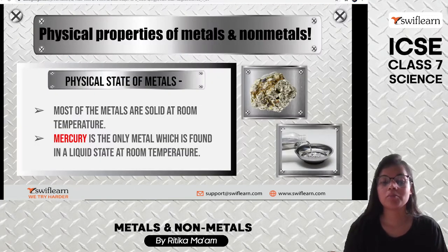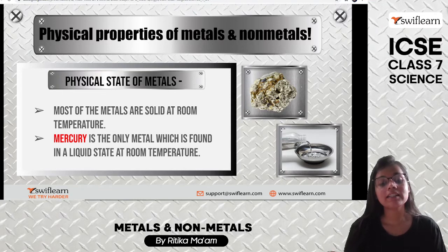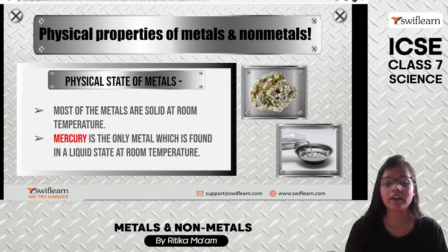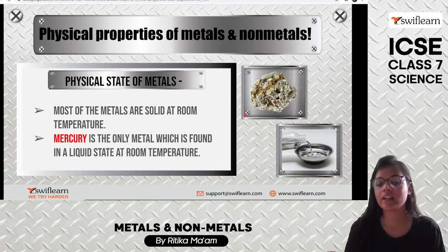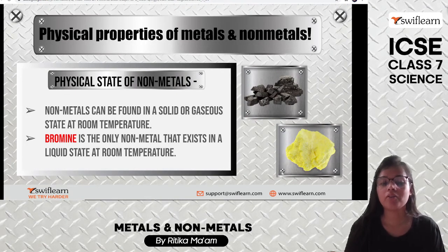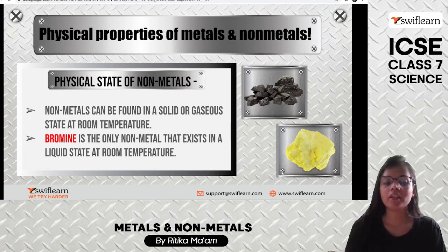Talking about the physical properties of metals and nonmetals — physical state: metals are mostly solid at room temperature. The one exception is mercury, which is the only metal found in liquid state, and that is why it is used in thermometers. Nonmetals are found in solid or gaseous state, but bromine is the nonmetal which occurs in liquid state at room temperature.